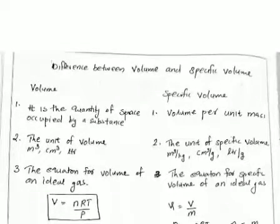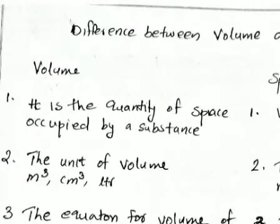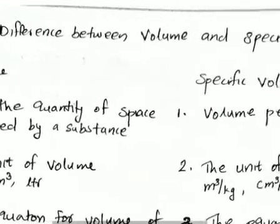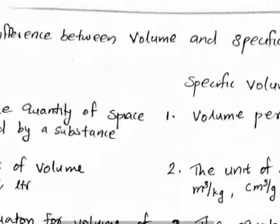Hello everyone. In the last video we discussed the difference between heat and temperature. In this video I will explain another basic interview question: the difference between volume and specific volume. First of all, what is volume? It is the quantity of space occupied by an object or substance — solid, liquid, or gas. But what is specific volume? It is volume per unit mass.